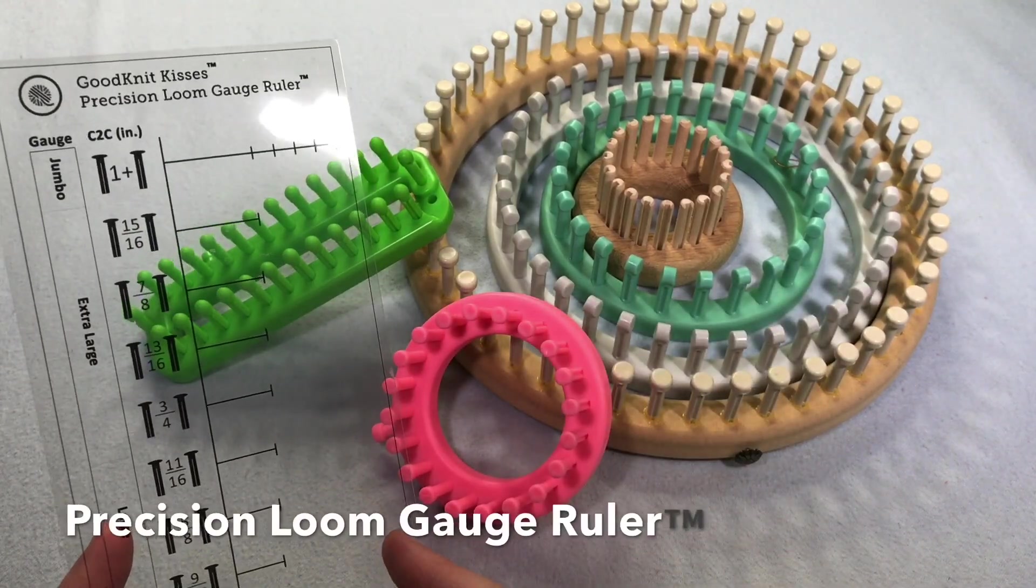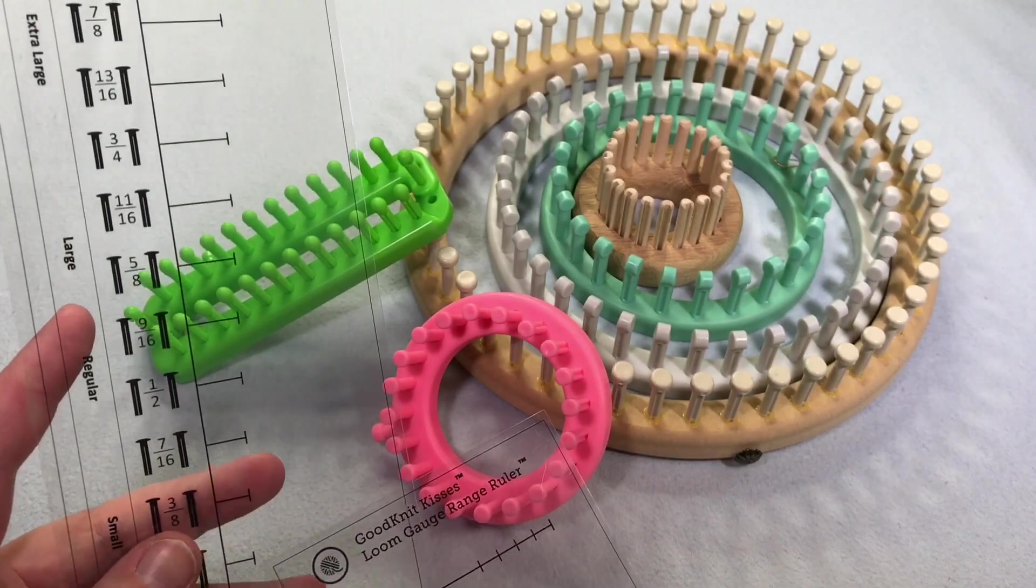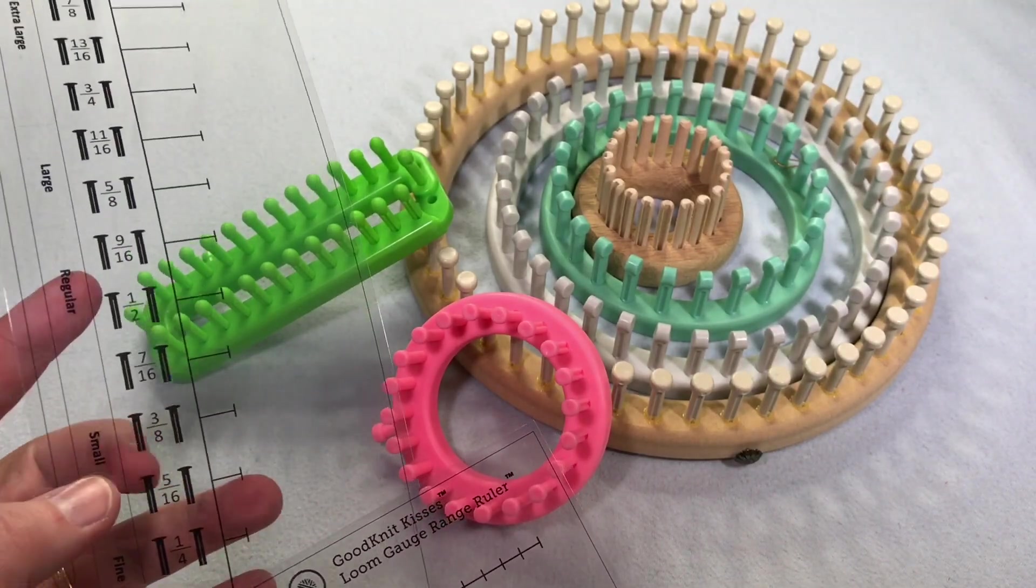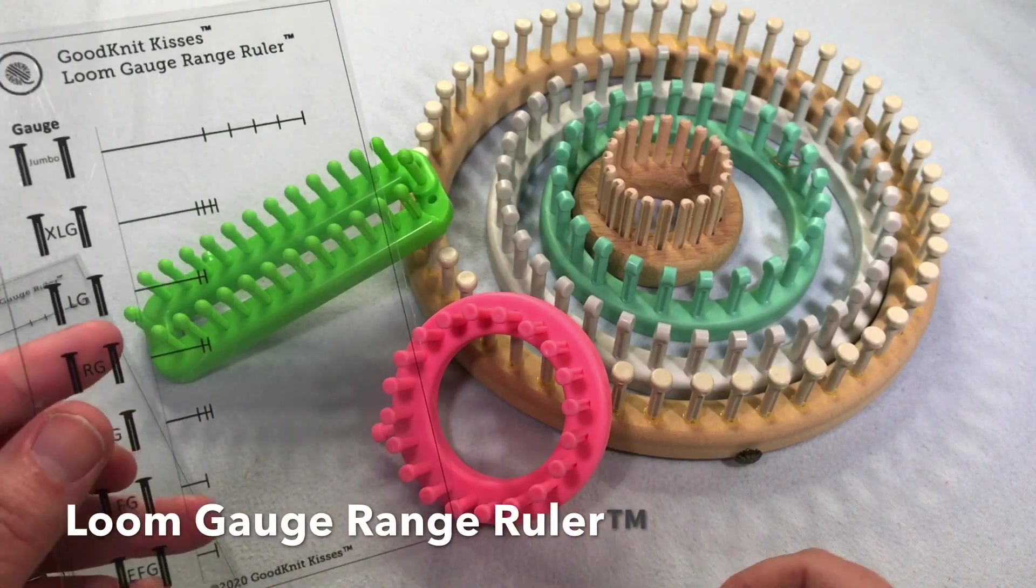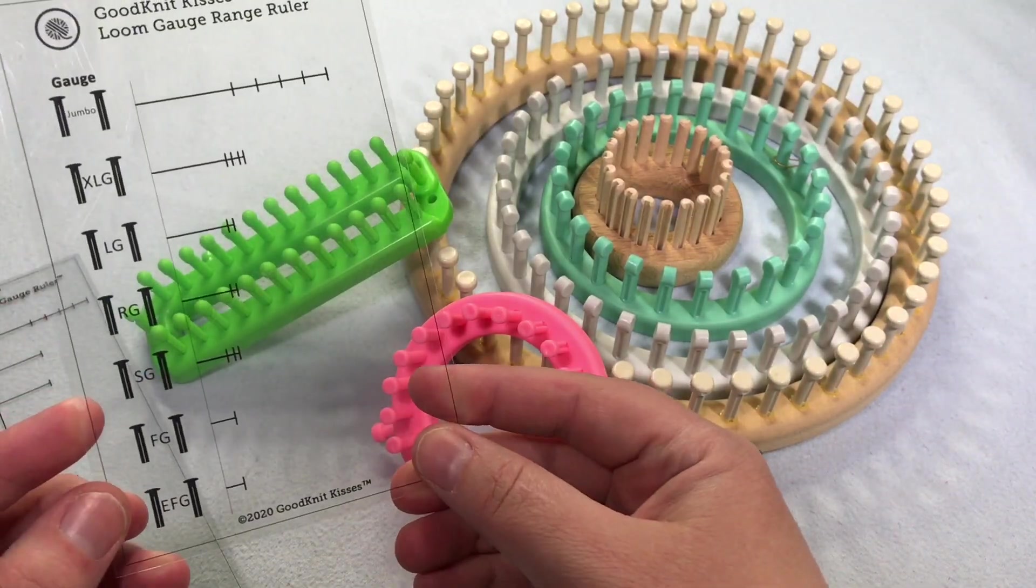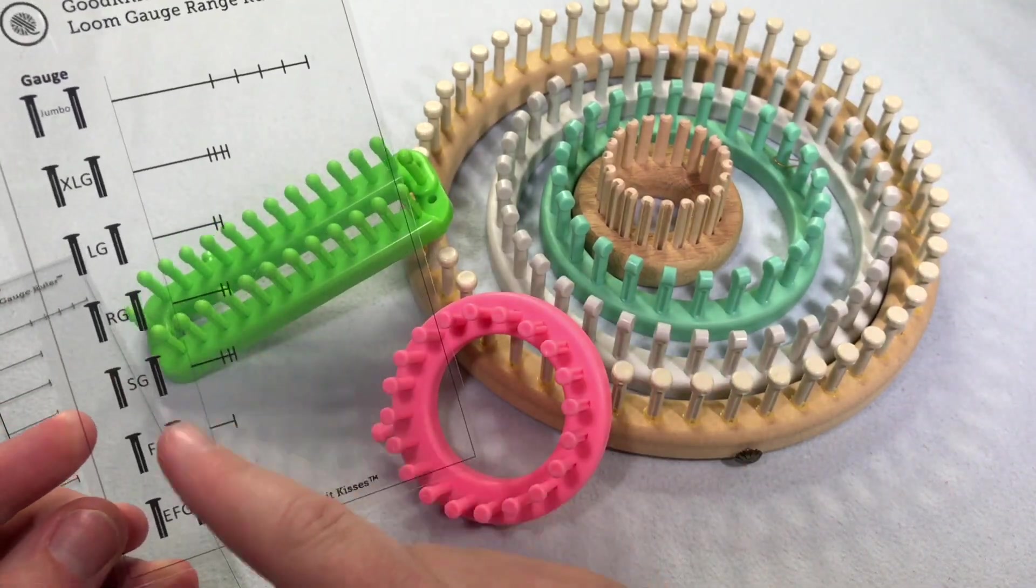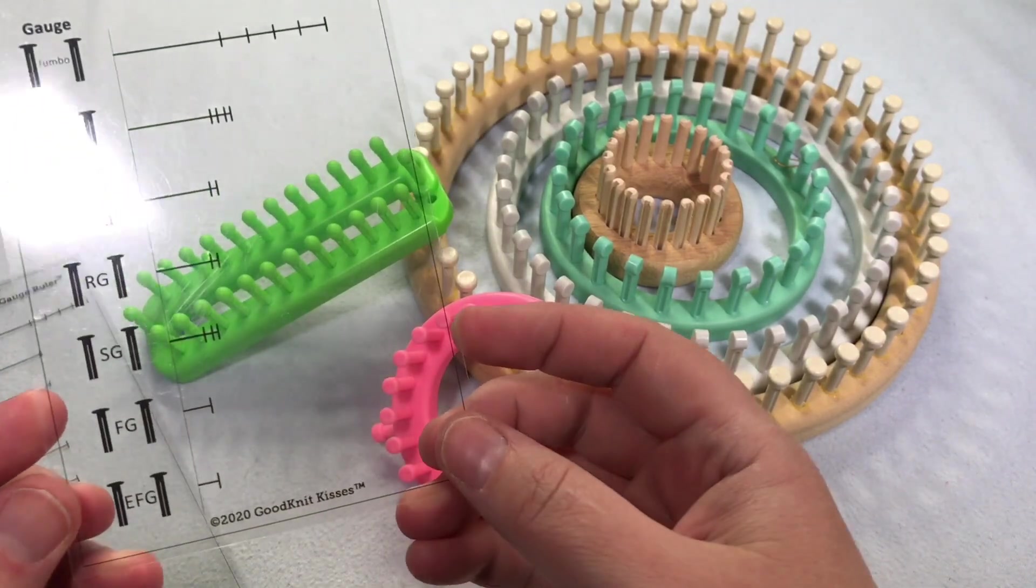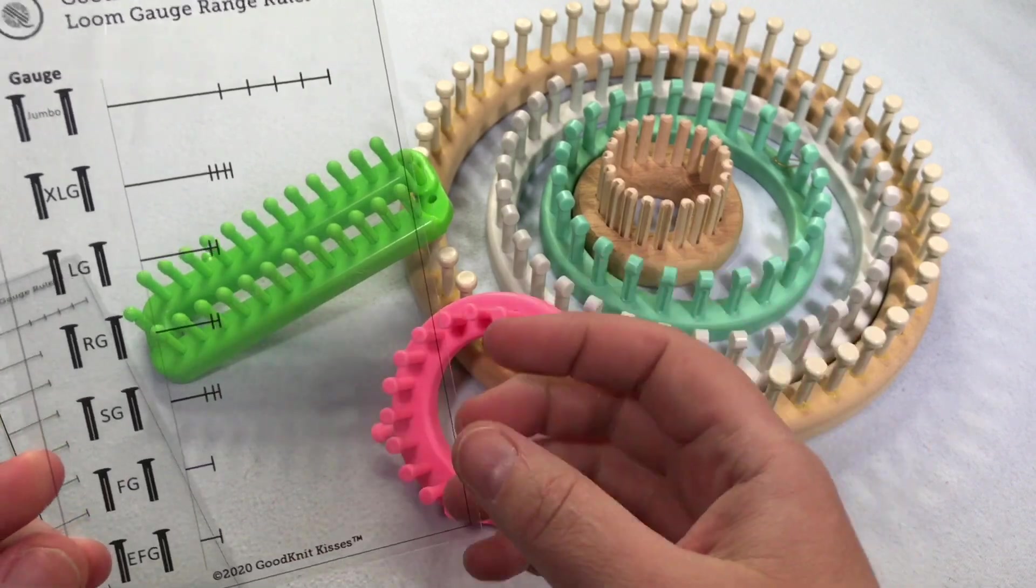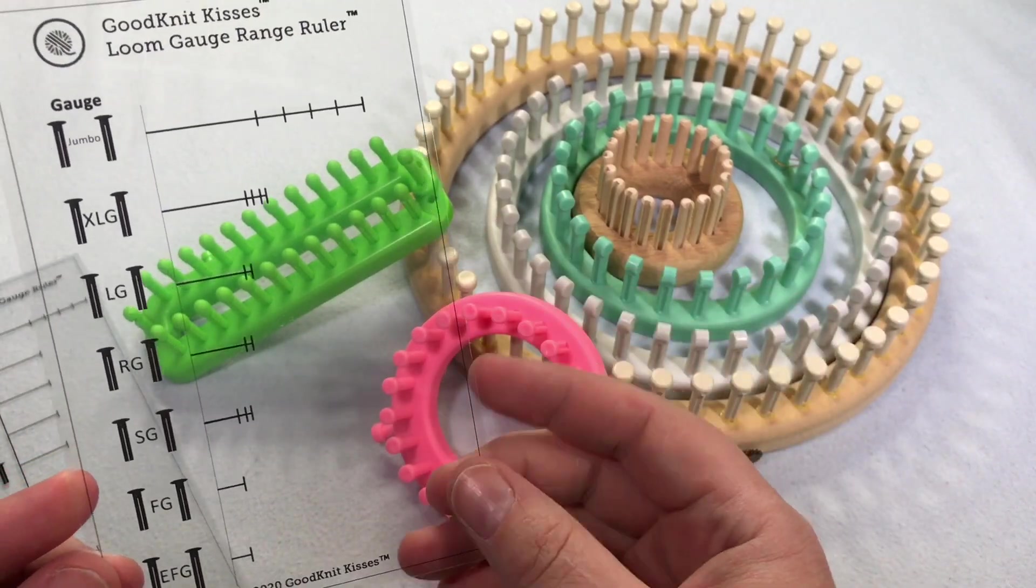We have the precision loom gauge ruler that gives you exactly what you need to find out what exactly that fraction is. It's so hard to measure on the measuring tape. And we have a range ruler, which is a small, shorter version, and it gives you all the ranges in the extra fine gauge all the way to the jumbo gauge looms. And all these little tick marks mark off all the ones that fit into that range.